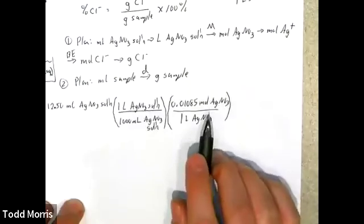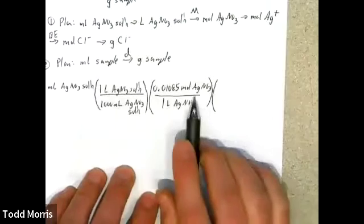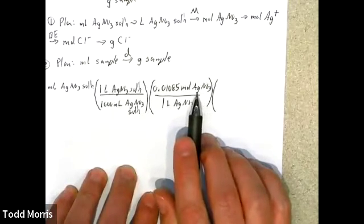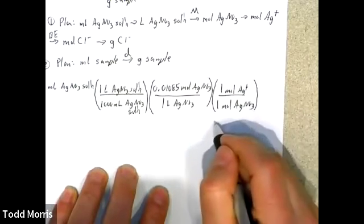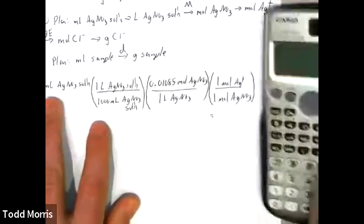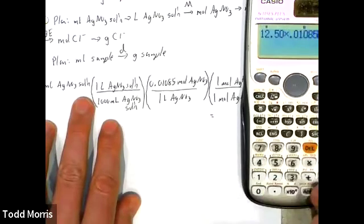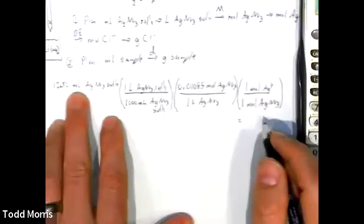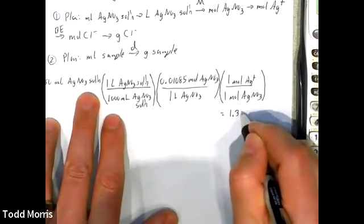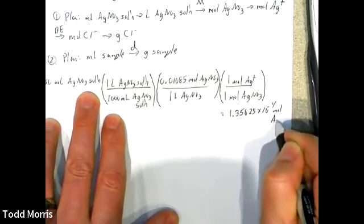I want to find moles of silver, not moles of silver nitrate, because it's silver ions that react with chloride ions in the balanced equation. For every one mole of silver nitrate, according to its formula, there is one mole of silver — a simple one-to-one ratio. Calculating 12.5 times 0.01085 divided by 1,000, we find that in 12.5 milliliters of our solution there were 1.35625 × 10⁻⁴ moles of silver ions.